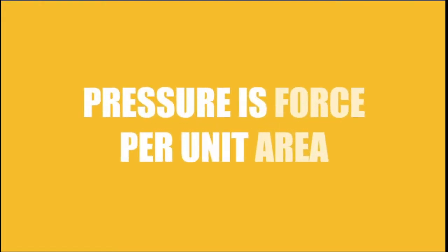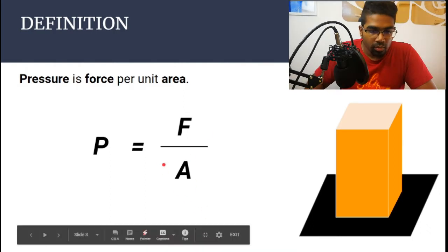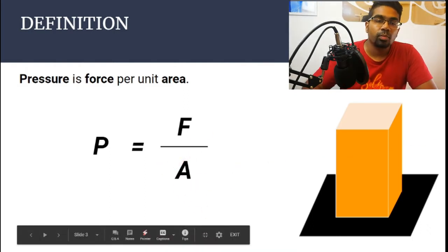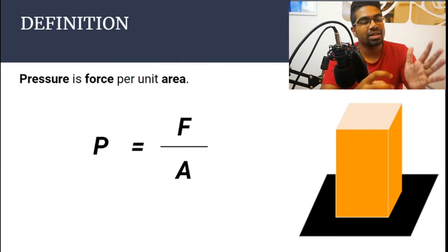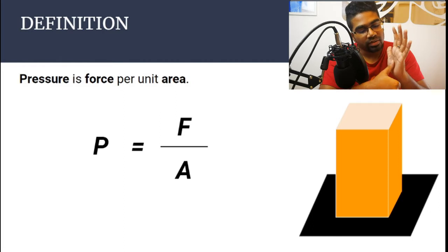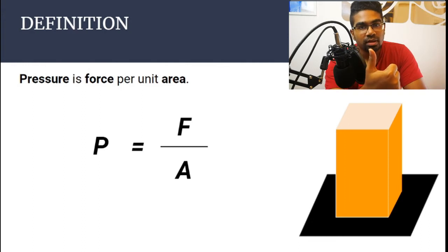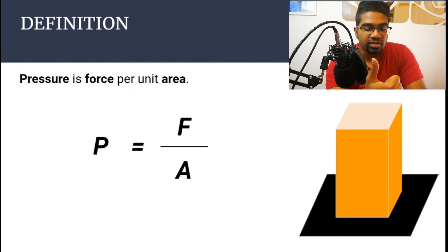Let's start with the definition of pressure. Pressure is force per unit area. Pressure can only be applied when there is a surface — the force is acting on a surface. So if we are pressing against a surface, then there is a pressure exerted on the surface. If you're just holding out your thumb like this, there is no pressure exerted anywhere. There needs to be a surface for there to be pressure.